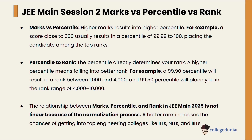Let's see the relationship between JEE Main Session 2 marks, percentile, and rank. Marks and percentile have a direct relationship — if a candidate scores higher marks, it results in a higher percentile. For example, a score close to 300 usually results in a percentile of 99.99 to 100, placing the candidate among the top ranks.